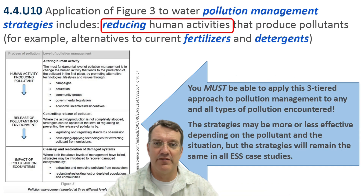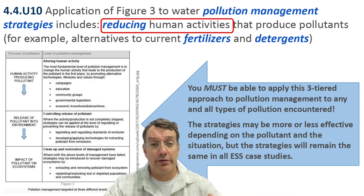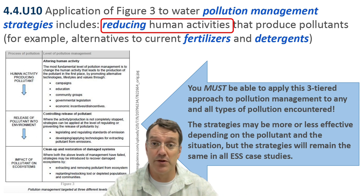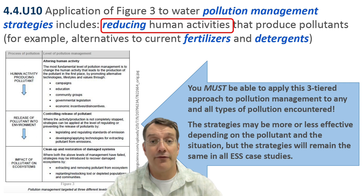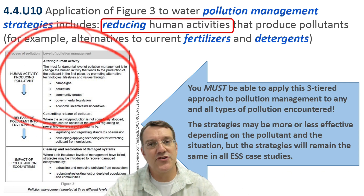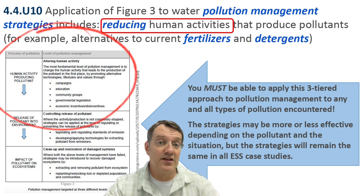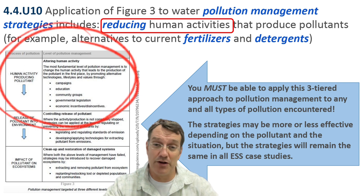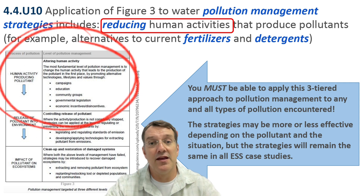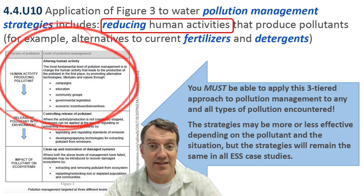To address water pollution effectively, we use a three-tiered pollution management approach. We'll see this not only in water pollution but with other forms of pollution within the syllabus. The first tier focuses on preventing pollution through education, legislation, and changing human behavior. Remember that tier one pollution management strategies are generally the most effective, but also the hardest to implement, because they require changing people's habits and their mindsets.